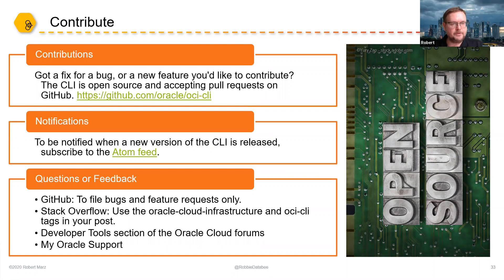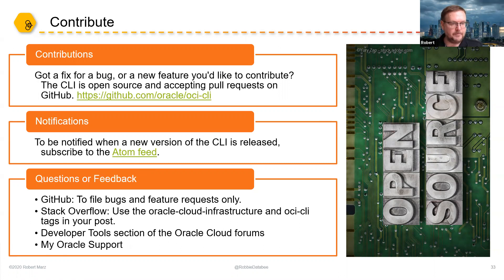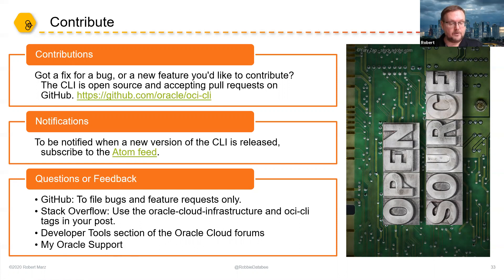The OCI CLI is open source, so you can contribute to it. If you've fixed a bug or written a new feature, go to GitHub and open a pull request - the development team is usually happy to accept good pull requests after review. There is also a notification Atom feed, so if there are new versions of the OCI CLI you'll get a notification in your feed reader. For questions or feedback: go to the user community, GitHub for bugs and feature requests, Stack Overflow where Oracle topics are very active, the developer tools section, and the Oracle Cloud forums. The OCI CLI is a supported Oracle product, so if you have an Oracle Cloud account you can use Oracle Support for any questions regarding the OCI CLI.